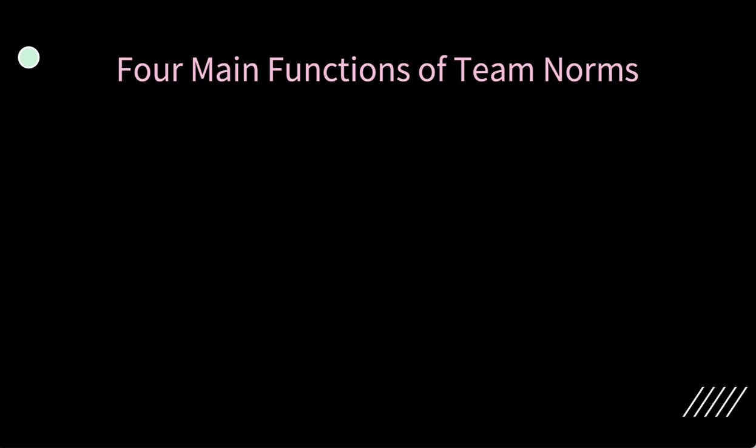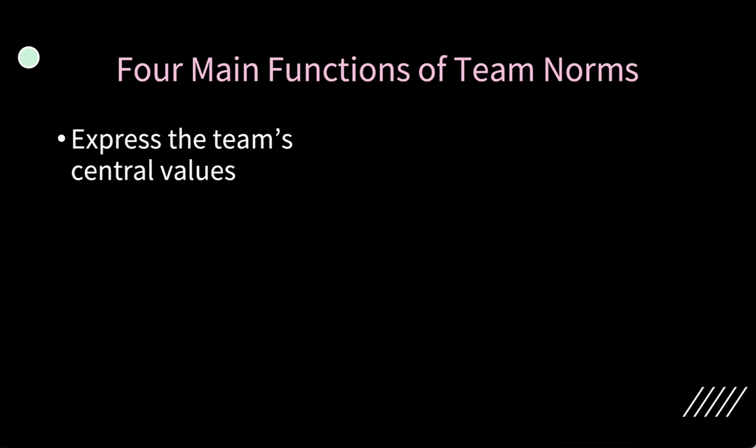There are four main functions of team norms. The first thing they do is help express the team's central values — who are we and what do we value? We know that values-based leadership is not just a fad; it's going to stay for quite some time, especially with newer generations being more transparent about the impact of their personal values on work relationships. So we need to talk through that — as a team, what do we value?